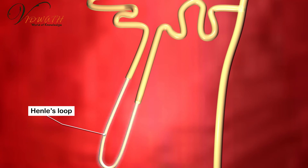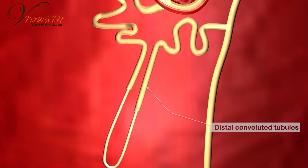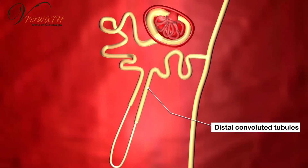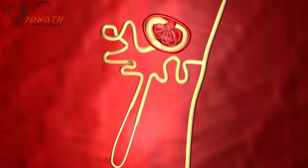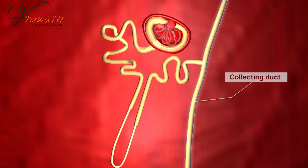After Henley's loop, the tubular structure called the distal convoluted tubule helps in water reabsorption. The tubular structure that connects other nephrons to the ureter is called the collecting duct.